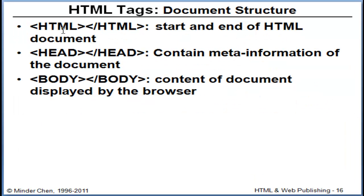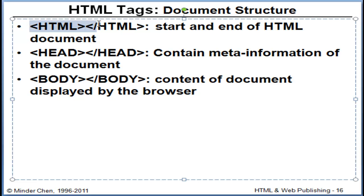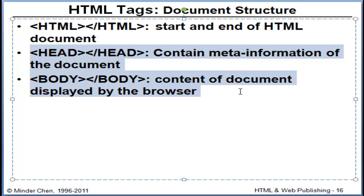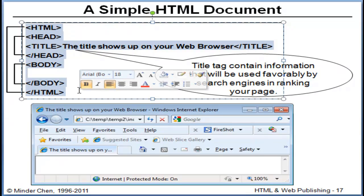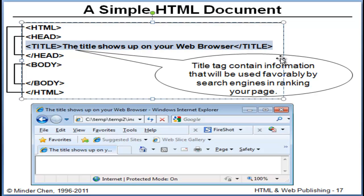This is an example of the simplest HTML structure. We start with the HTML tag, and inside the HTML tag we can have two sections. The first section is the head section, which contains meta information about the document. The body section contains the content that will eventually be displayed by the browser. You can use any text editor to create an HTML document, as long as you save it as a pure text file with a .htm or .html extension.